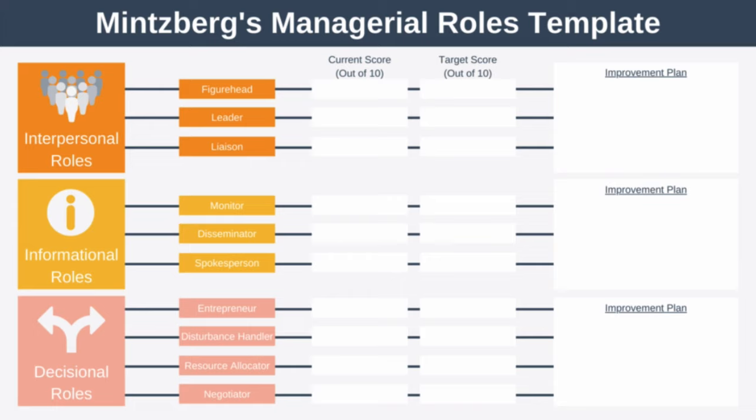You can use Mintzberg's managerial roles to assess and develop the managerial competence of yourself or others. To help with this, we've produced a template you can download by following the link below this video to our companion article. To use the template, first score yourself out of 10 for each management role. Next, set a target score for each role out of 10 — note that not every role will need a target score of 10. For example, if you're managing a small team without line management responsibility and don't tend to work with others outside the team, you don't need to target a 10 for your negotiation skills — perhaps a 3 would suffice. Once you've identified the areas you need to improve, the final step is to create a plan to improve each of those areas over time.